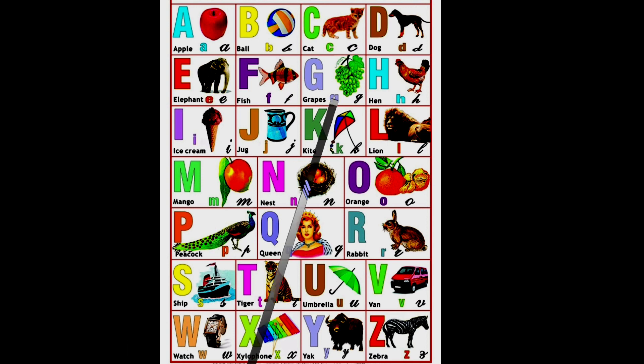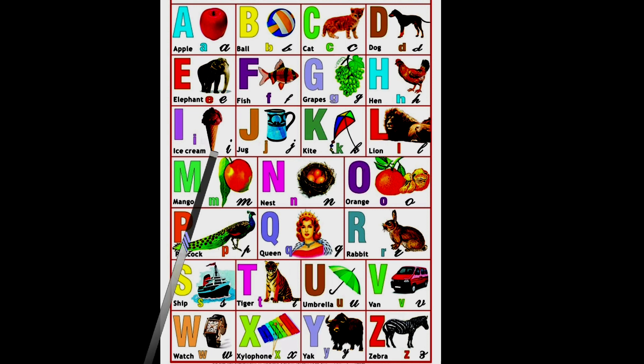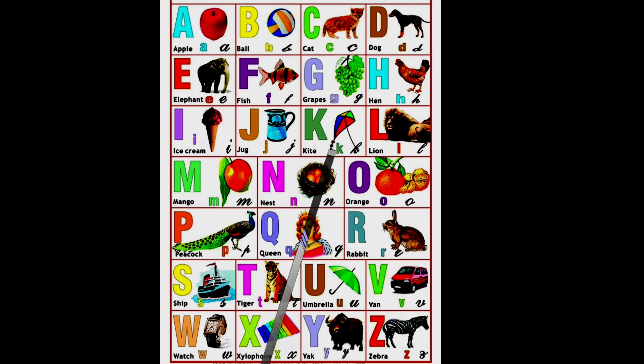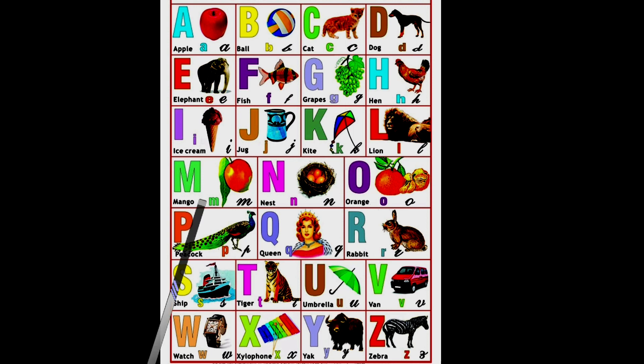G for grapes, H for hen, I for ice cream, J for jug, K for kite, L for lion.